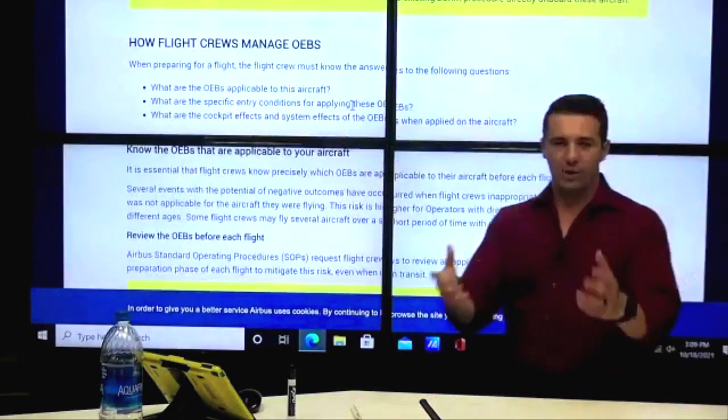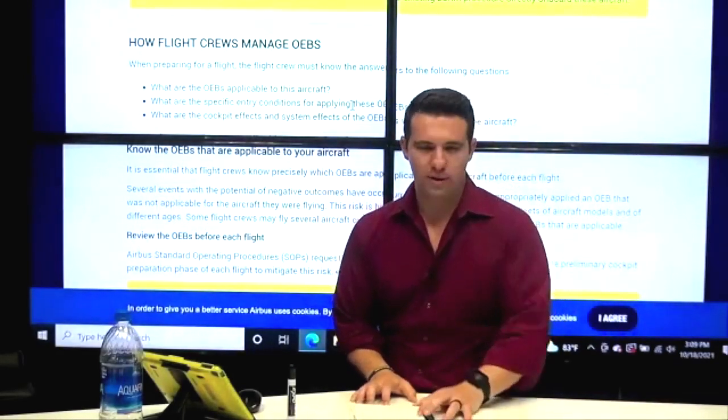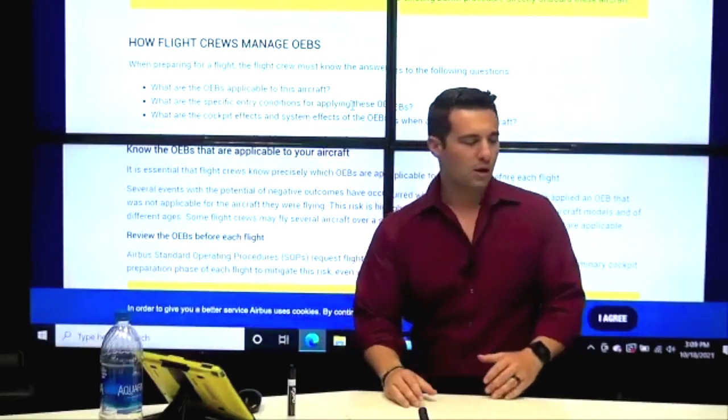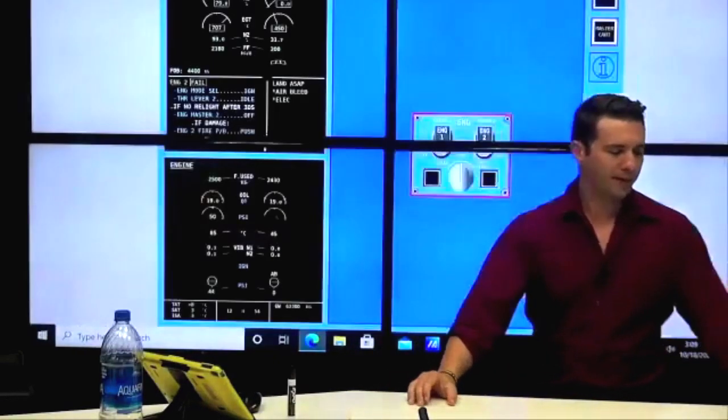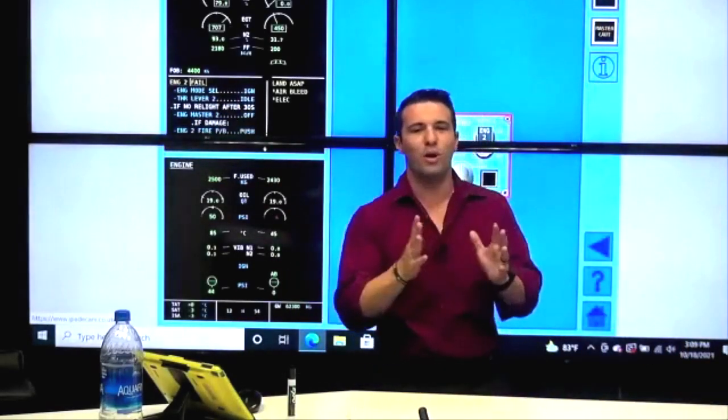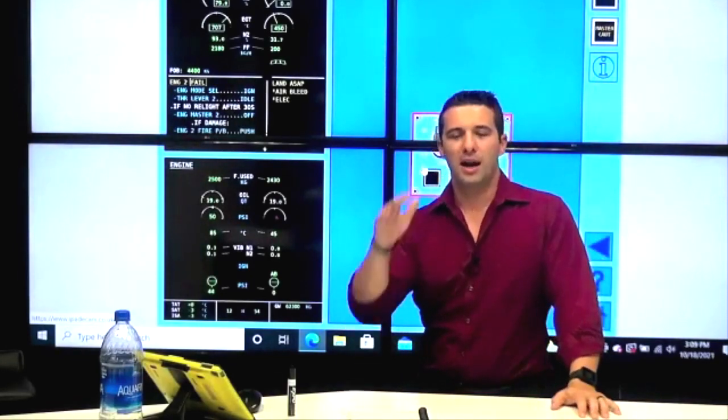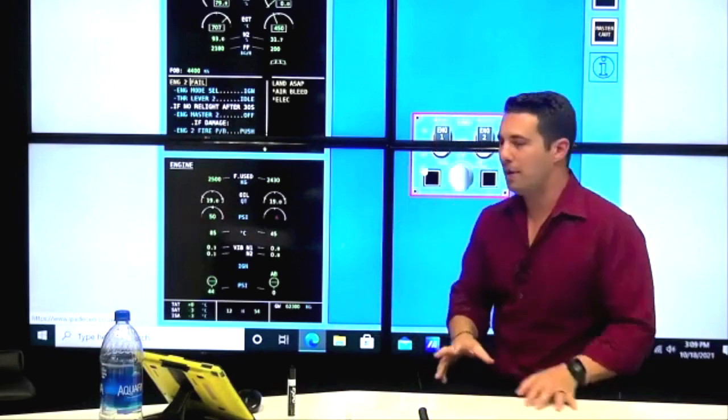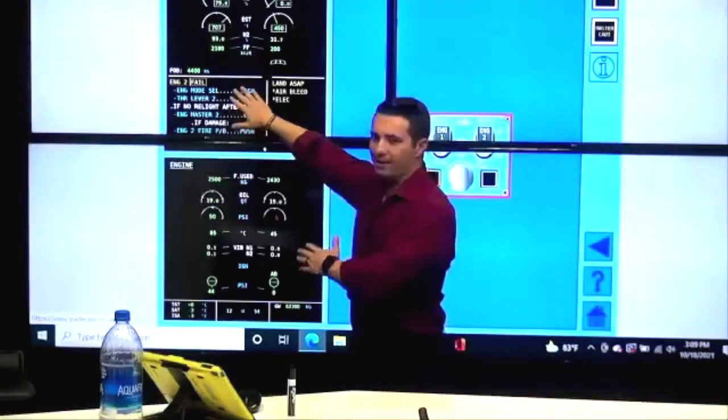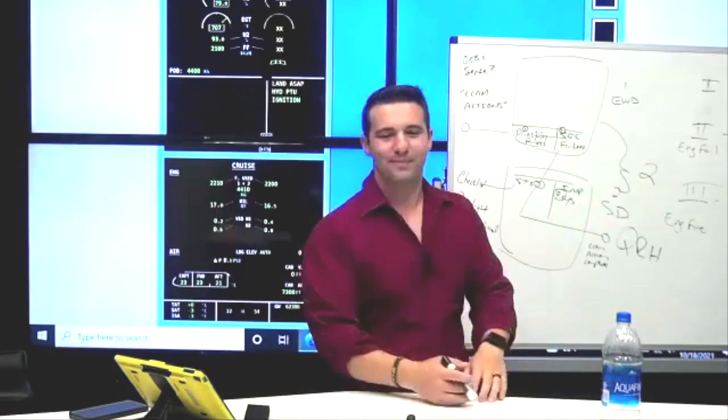Now, the OEB or the operating engineering bulletin, the reason I bring this up is because if you haven't already learned the ECAM before, maybe you're flying the plane, maybe you're not, maybe you want to go fly the plane, it's very typical for an ECAM to pop up like this one - engine to fail. And immediately we want to jump into ECAM actions, we want to say ECAM actions right away. And I want you to know that there are some OEBs that say, hey, instead of applying this ECAM, apply this OEB procedure instead.